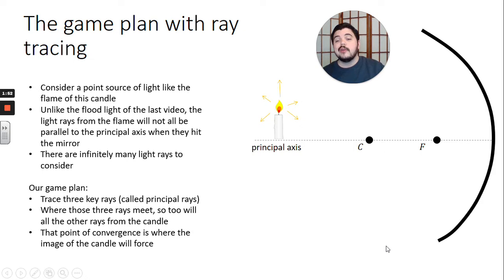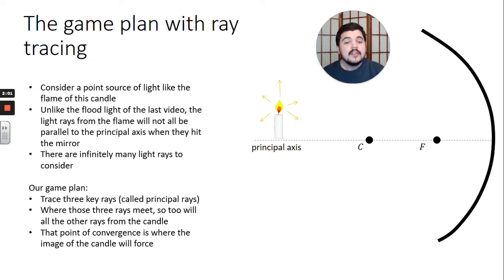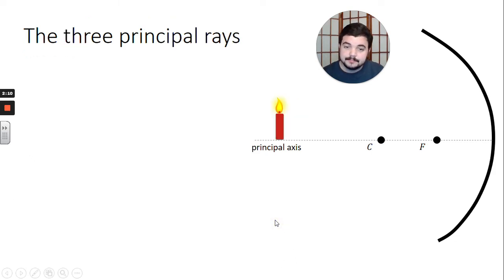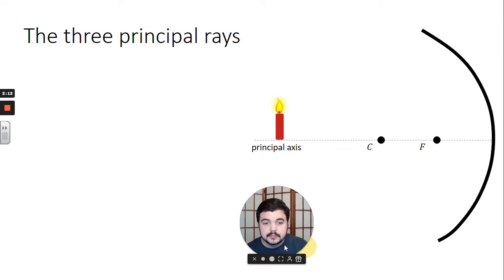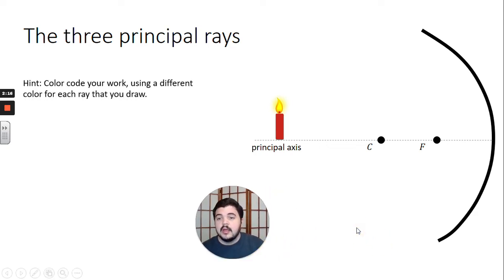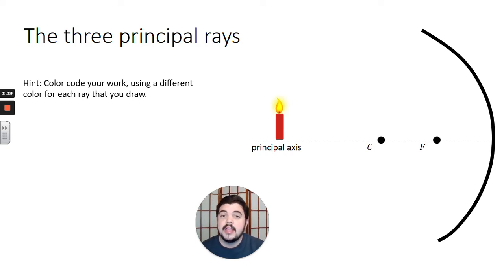That point of convergence, where our three principal rays merge, will be where the image of the candle is shown. For a plane mirror the image was behind the mirror, but that won't always be the case with spherical mirrors because the light rays converge in front of the mirror. I encourage you to color code your work — use a different color for each light ray you draw and that will help you keep your diagrams easier to read.